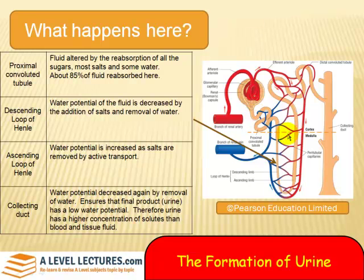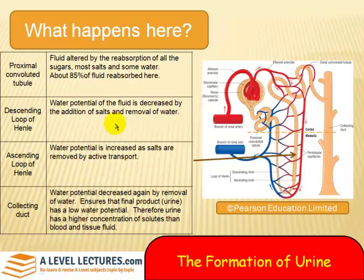We then go into the descending limb of the loop of Henle, where the water potential of the fluid is decreased by addition of salts and removal of water. Then we come into the ascending limb of the loop of Henle, where water potential is increased as salts are removed by active transport — so this is an energy-demanding section.